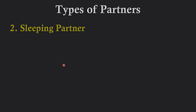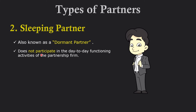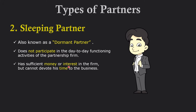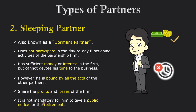The second type is sleeping partner, also called dormant partner. Sleeping partners are those who do not participate in the day-to-day activities of the business. They invest money in the business but do not give their time. However, they are bound by acts done by other partners. Like all partners, they must share profit or loss, but as sleeping partners, giving a public notice before retirement is not mandatory for them, whereas it is compulsory for all other partners.